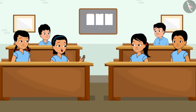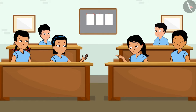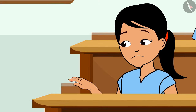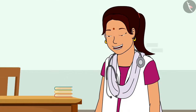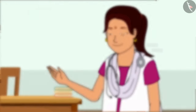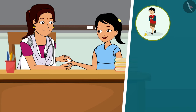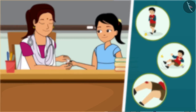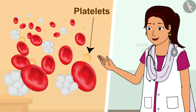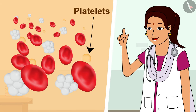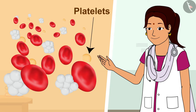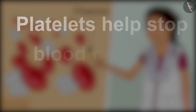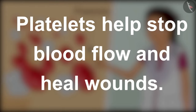Oh, what happened Sonu? Look, your finger is bleeding! Nothing much — my finger got stuck in this shelf. Come, let me apply some Dettol. Didi, when we fall or get hurt, our blood starts oozing out but after a while it stops, and there is a formation of a clot. Why does this happen? There are another type of cells present in the blood known as platelets — the clot is formed because of their presence.